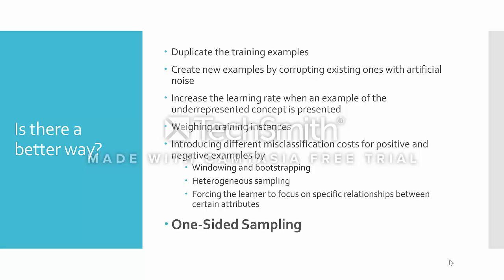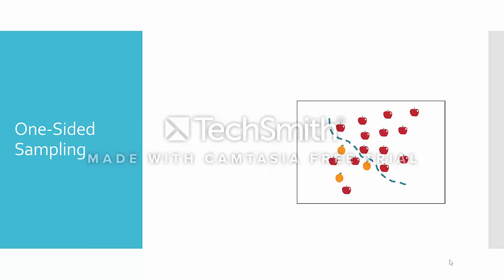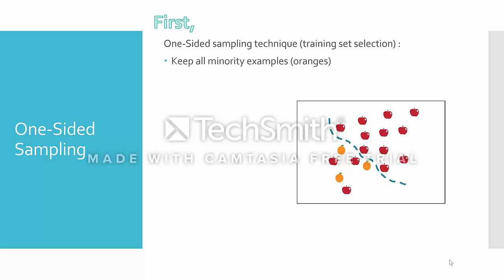That technique is referred to as one-sided sampling. Before getting into the algorithm, some concepts will make understanding it easier. One-sided sampling is a technique used to select which examples should go in the training set. The main concept is to keep all minority examples, and only select a representative subset of the majority examples — which are apples in this example.